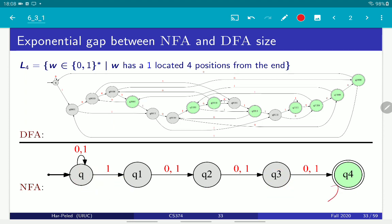This is the NFA. It has 4 states, it's very simple. The DFA, on the other hand, essentially has to remember the last 4 bits. So you're going to get 16 states and you get the wonderful creature on the top.